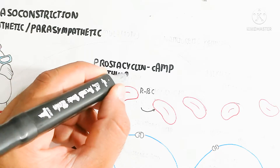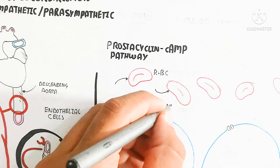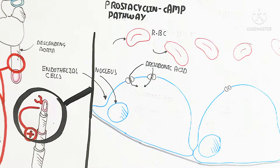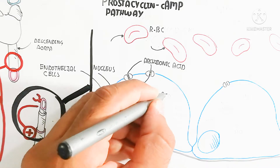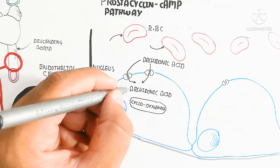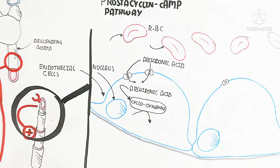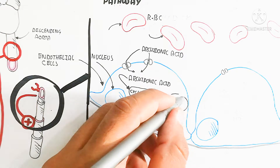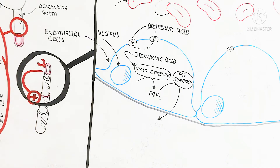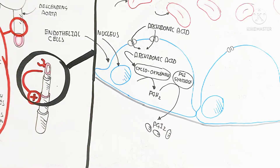The first pathway is the prostacyclin/cyclic AMP pathway. Arachidonic acid metabolism: arachidonic acid enters the endothelial cell, and in the presence of cyclooxygenase enzyme it is converted to PGH2. PGH2 is then converted by PGI synthase enzyme to produce PGI2. This PGI2 moves toward the smooth muscle cell, activating it for vasodilation — not vasoconstriction.